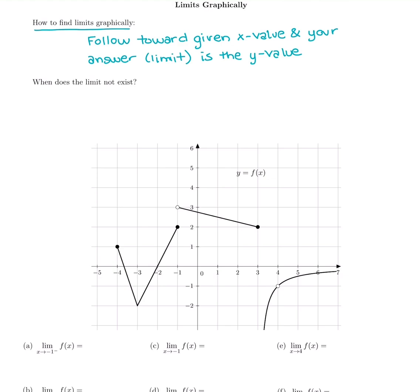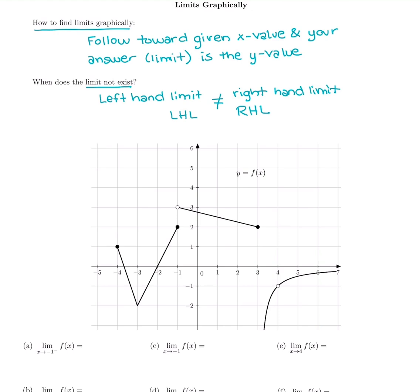The catch is the limit does not always exist. We want to remember what happens to make the limit not exist. That happens if the left-hand limit (LHL) — the limit you get as you come in from the left-hand side — is not equal to the right-hand limit (RHL). So if we approach from the left and get 16, then come in from the right and get negative 20, those are not the same, so we say the limit does not exist.